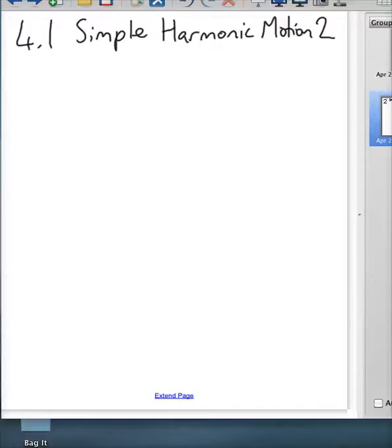Okay, here we roll. This is the second part of simple harmonic motion. Now, so far we've looked at the spring and the mass and what happens to the force as the spring and mass bob up and down.